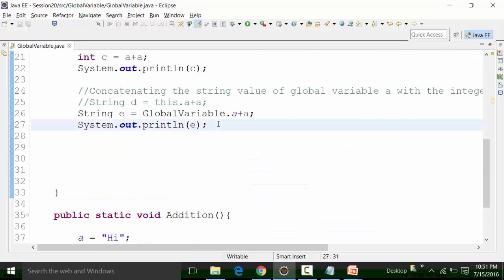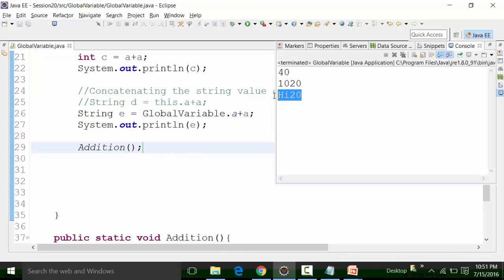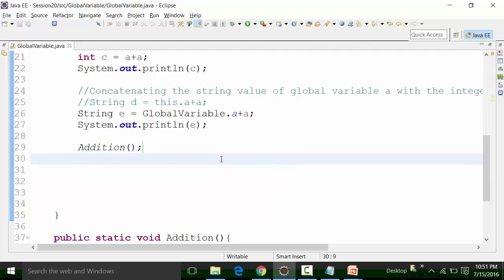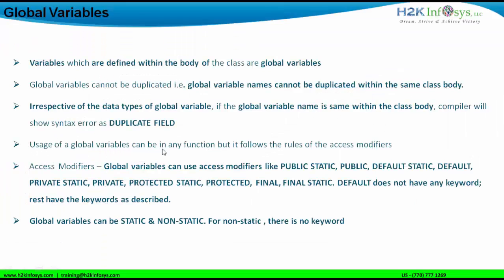I am not getting the value. The value should be 'hi 20' — so this is a concatenation. The addition function has been created but you have not called it inside the main method. So what you can do is come to the main method body, use control-space, and call the addition function. The moment you call it, save the class file and run it — you are going to get this particular value. The usage of global variables can be in any function, but it follows the rules of the access modifier. I am restricting myself to only static global variables and not putting examples for non-static global variables because that is part of the OOP concept, to be discussed later.